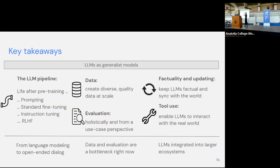I talked about three things: first, the LLM pipeline — focusing on life after pre-training, methods of going from language modeling to communication. Second, data and evaluation — showing how much of a bottleneck data is right now and how many open questions we have around evaluation. Finally, I highlighted two interesting research areas: factuality and tool use. The larger question around both, which I find very interesting, is that we are now moving from looking at large language models in isolation to seeing them as a component in a larger ecosystem. I'm very excited to see where this goes in the future.